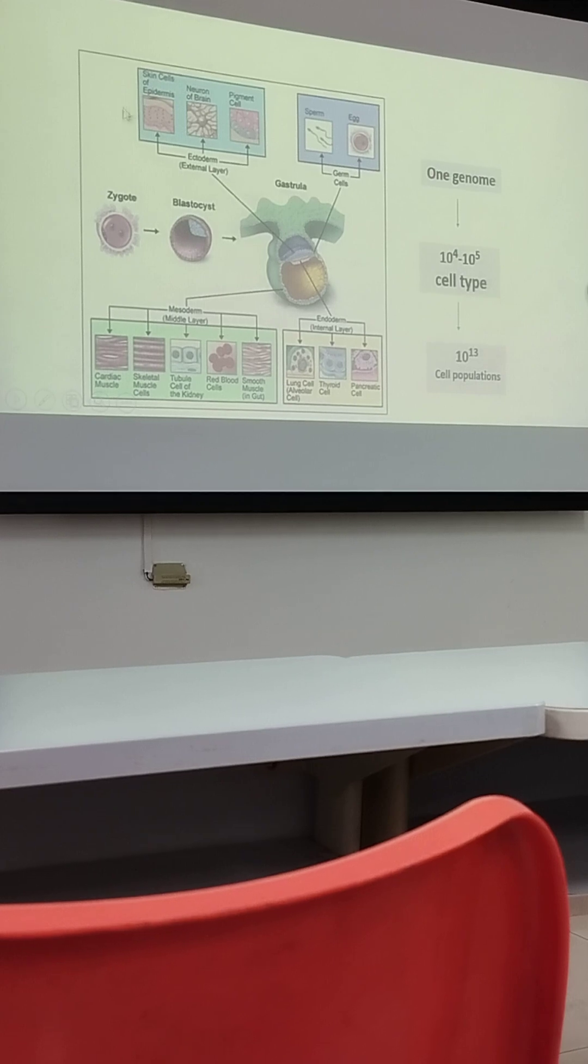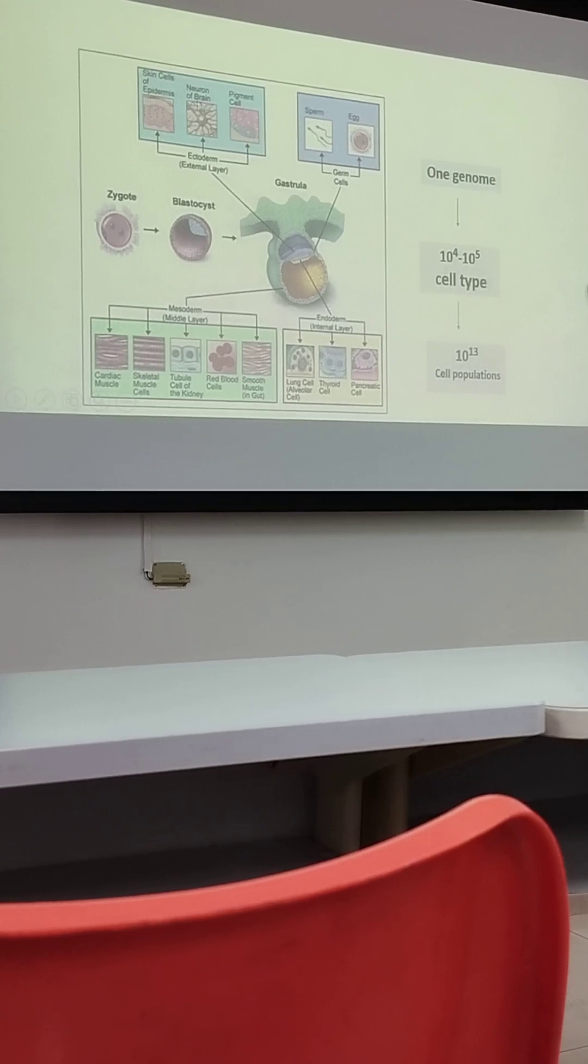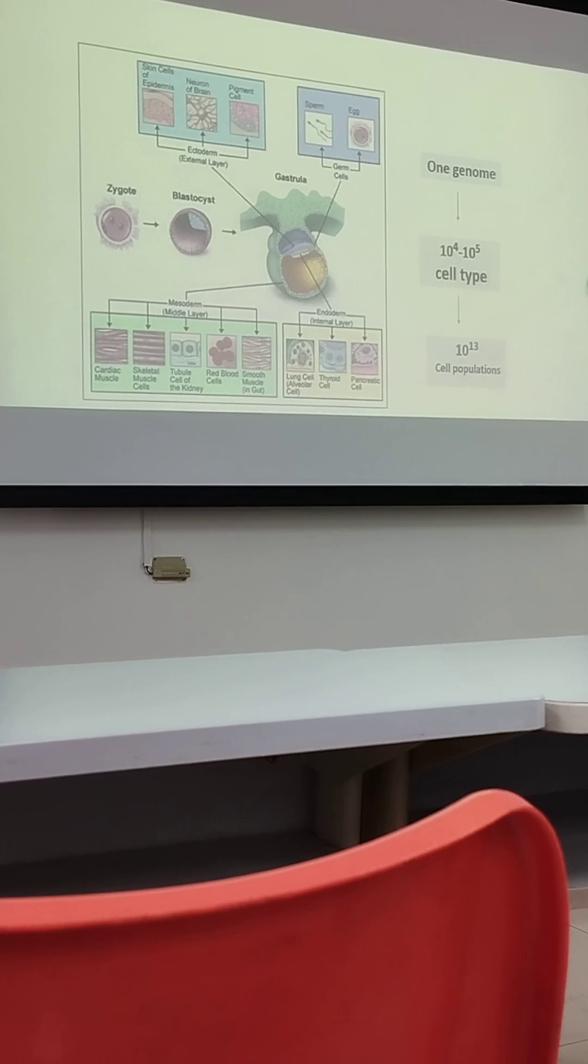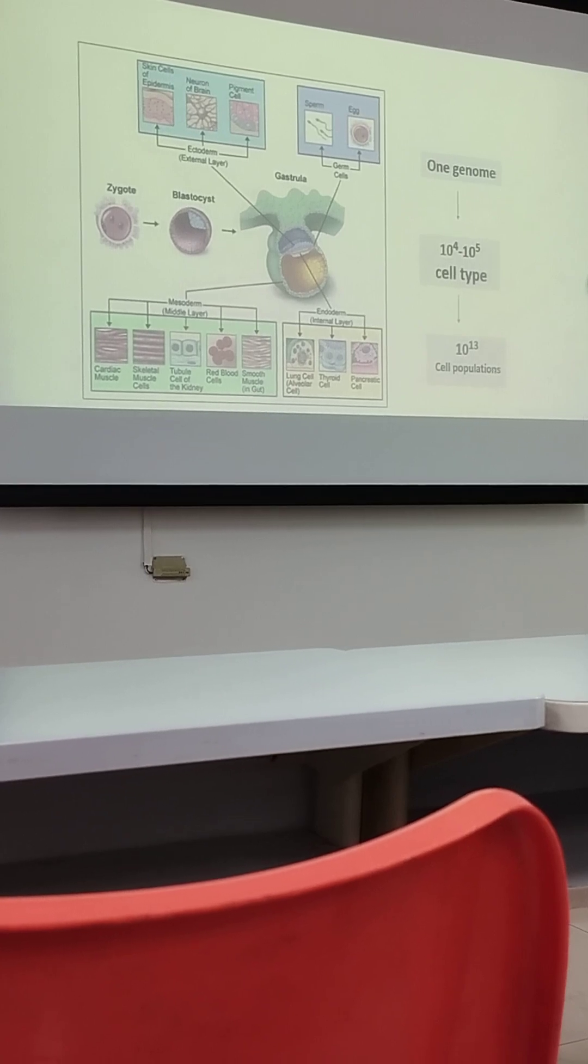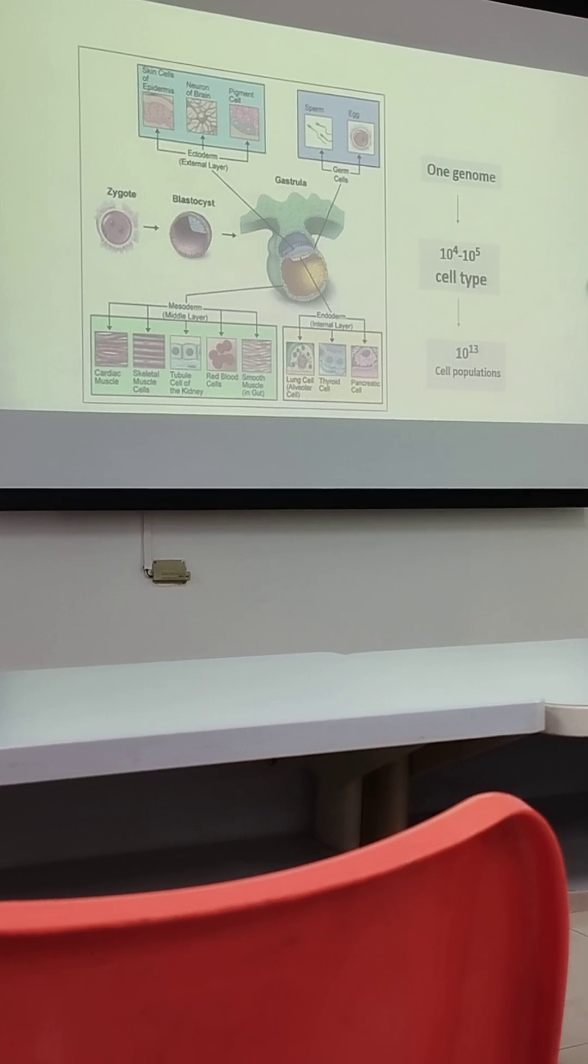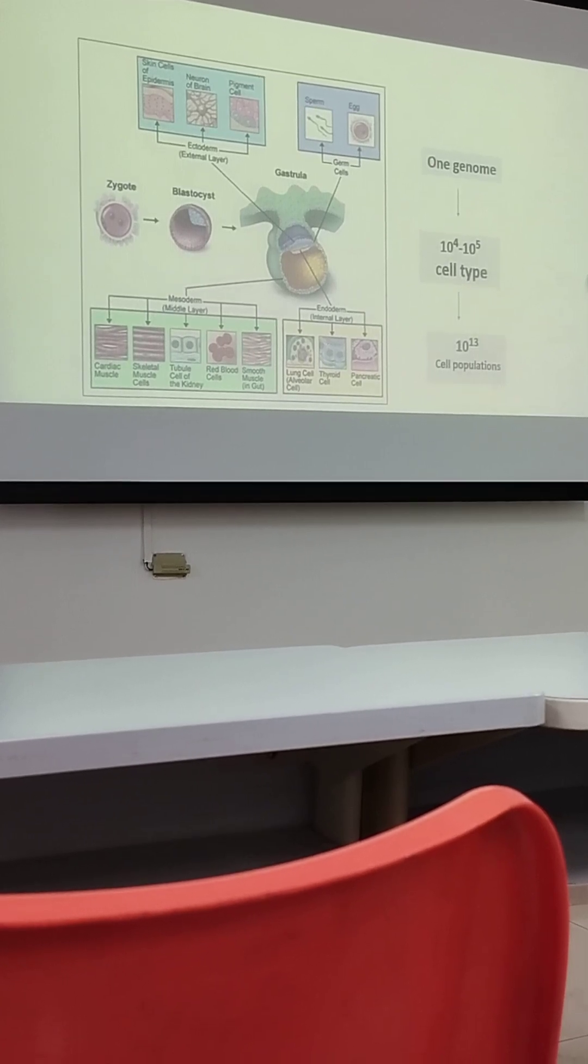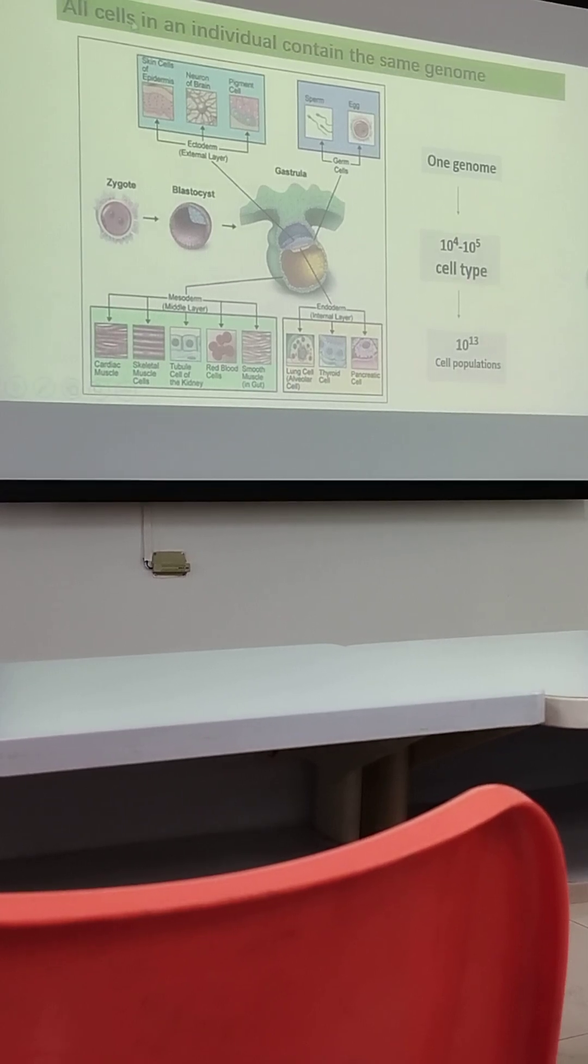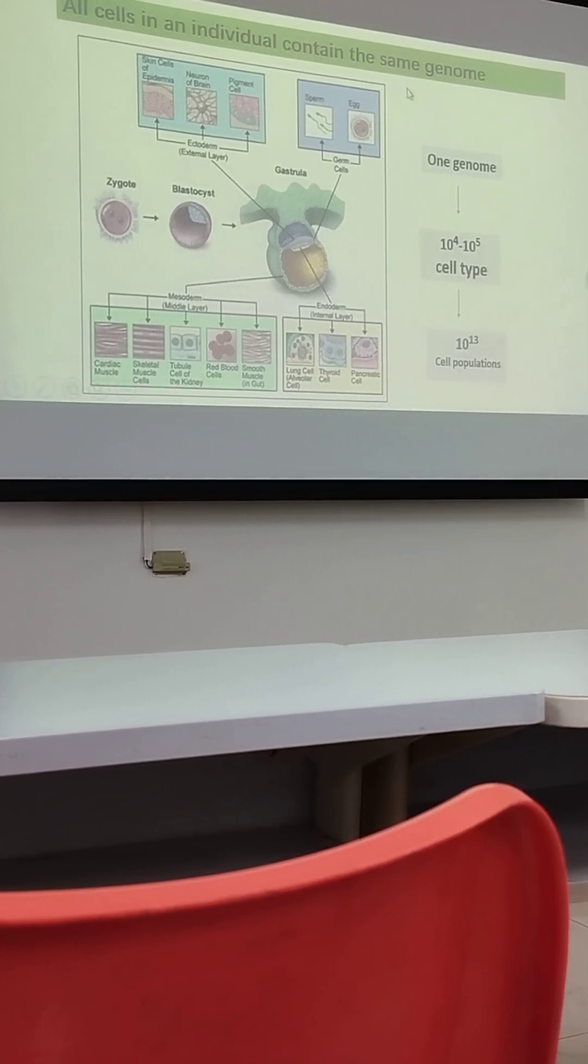So here, as we know, the skin cells, or neural cells, or pigment cells, every individual cell has only one set of genome, right? So why do skin cells just divide to skin, and neural cells divide to neural? There are a lot of regulatory mechanisms, regulatory genes. So that's all cells in an individual.